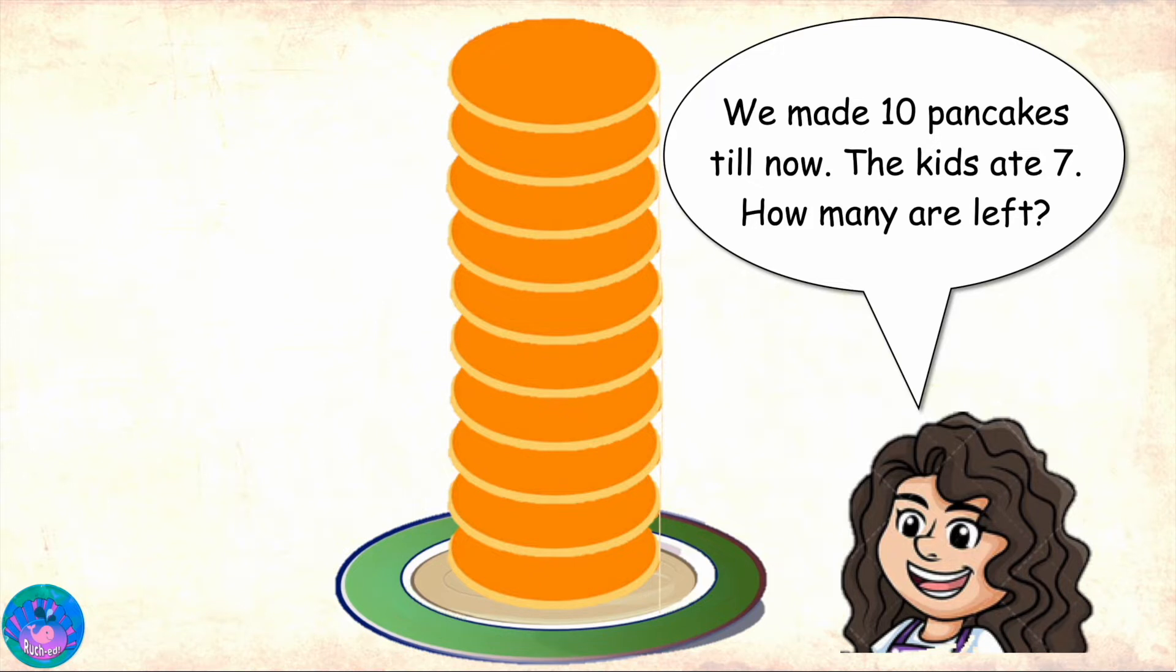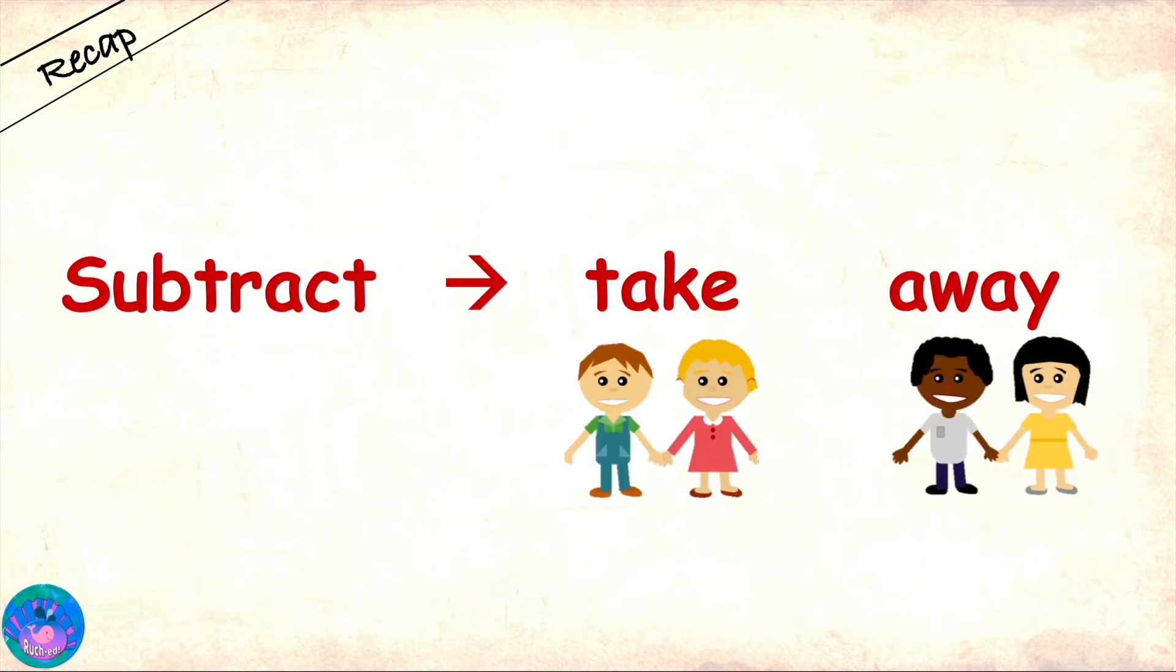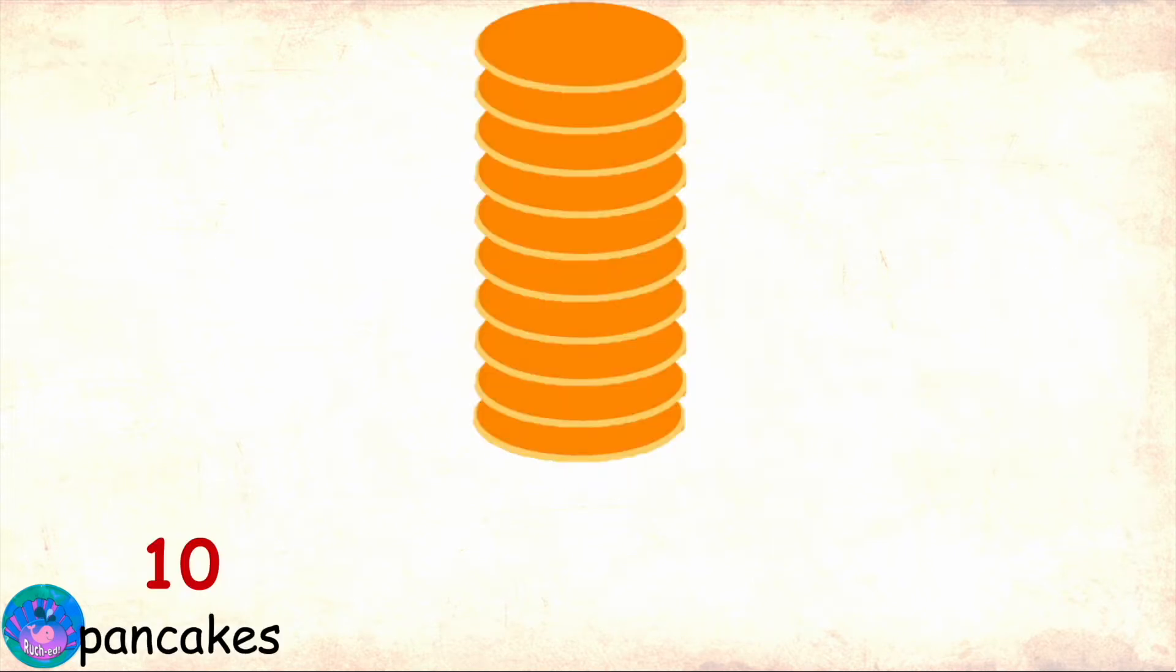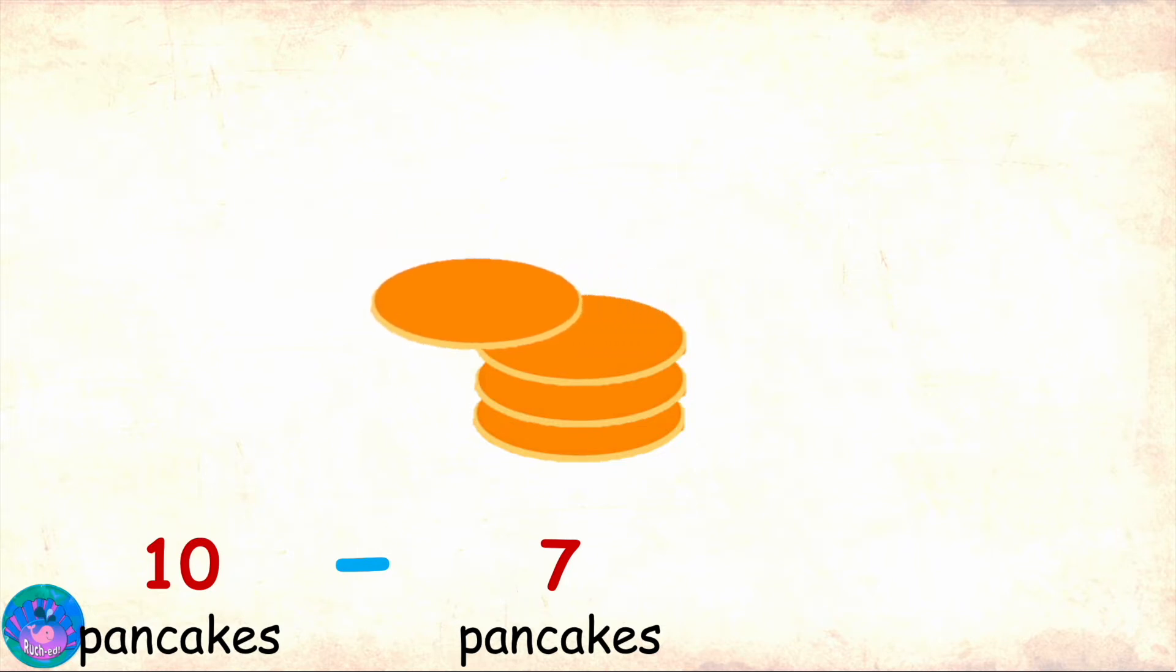Now, if you remember, in order to find out how many are left or remaining, we need to subtract or take away. So, from the 10 pancakes that were made, we can subtract or take away 7 pancakes that were eaten. Let's do this. 1, 2, 3, 4, 5,